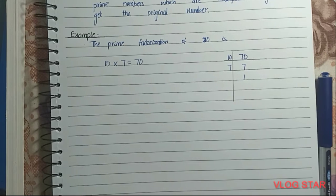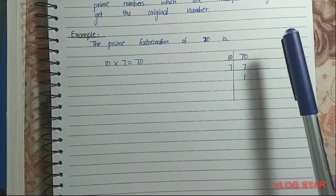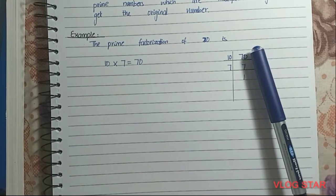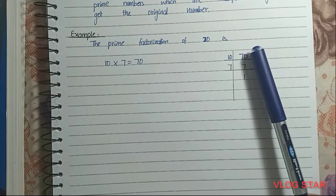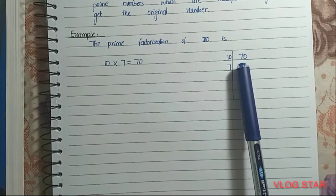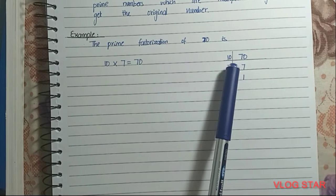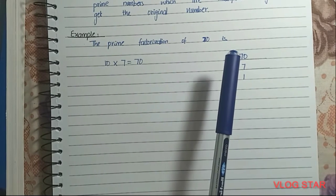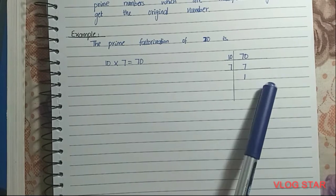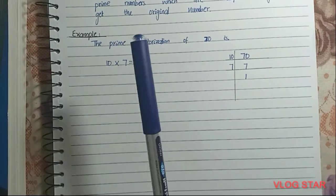For example, the prime factorization of 70: First, we write 70, then we find a factor which is 10. As you know, 10 × 7 = 70, so 7 will come here. 7 is a prime factor, so 7 ÷ 7 = 1.